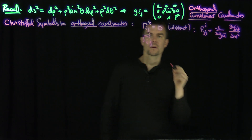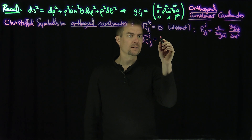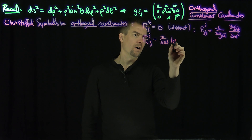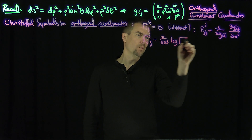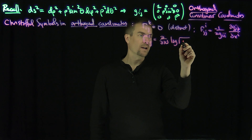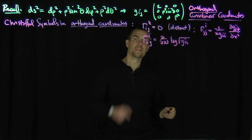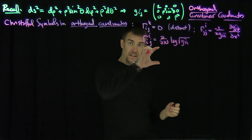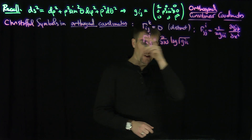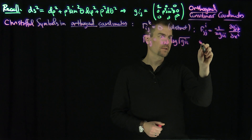We have γ^i_jj = −(1/2) g^ii · ∂(g_jj)/∂x^i. And γ^i_ii = ∂/∂x^j of the log of the square root of g_ii. These are for fixed indices — I'm not summing over i here with Einstein summation. All indices are fixed.